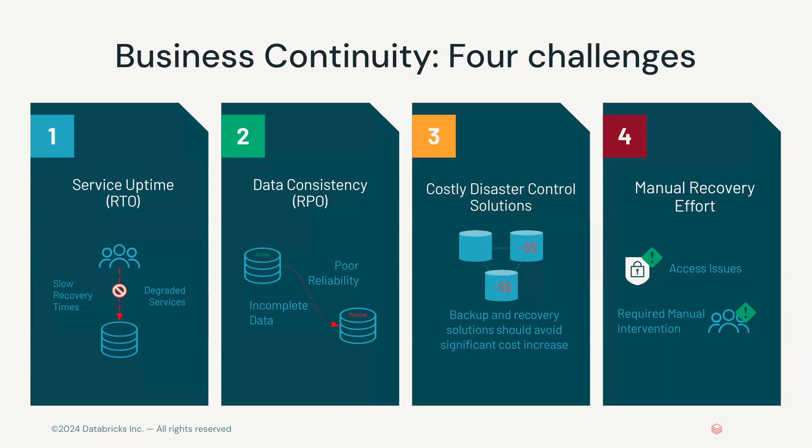The second pillar is RPO, which basically means the state of consistency. If an outage happens right now, how much data did I lose? If I'm only doing backups every half hour, I lost a half hour of data. If I only do backups once a day, I could lose up to a day of data. Disaster recovery solutions themselves have a cost. If everybody could just have a fully active-active system where, the instant an outage happens, the system flips over to another region and everything just works — that's great, but it costs a lot of money.